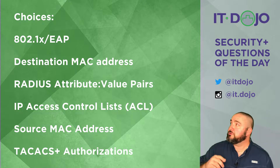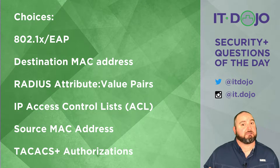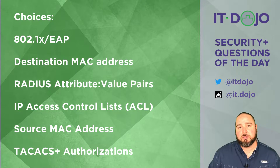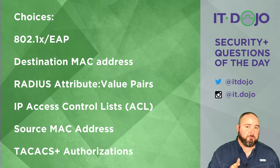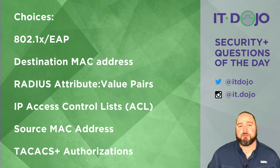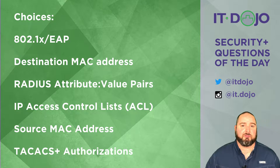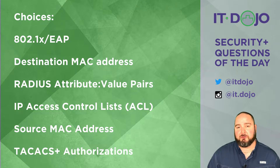Choice number one: 802.1x with EAP is not the right answer. 802.1x is port-based access control and EAP is the Extensible Authentication Protocol. Those work together to provide awesome authentication solutions like Protected EAP and EAP-TLS — very cool stuff — but none of those deal with port security in the way this question is asking. So 802.1x and EAP are awesomeness, but we're looking for a different answer.